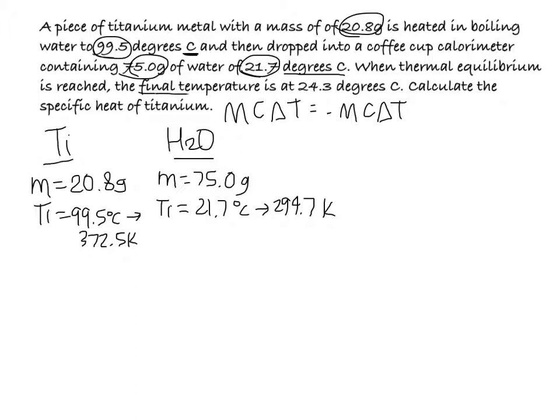It says right here that the final temperature for both substances reached 24.3 degrees Celsius, so both of them would be 297 Kelvin. For water, for a calorimetry problem, you will always have a specific heat capacity of 4.184.